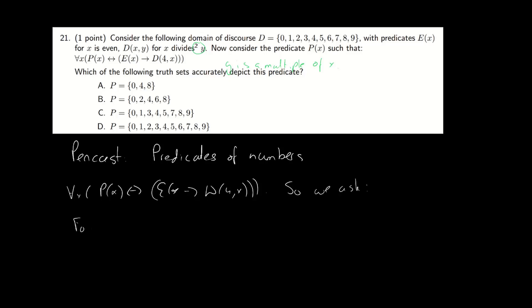So we ask ourselves the question, for what x is it true that E(x) implies D(4,x)? Well, remember, this is an implication and an implication is true when the first part of the implication is false.